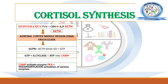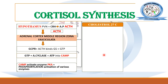Cholesterol is a 27-carbon molecule — its structure contains 27 carbon atoms. Once the side chain cleavage enzyme acts on cholesterol, it is converted into a new molecule called pregnenolone. Pregnenolone is a 21-carbon molecule. The side chain cleavage enzyme removes the carbon side chain from positions 22 to 27, yielding pregnenolone, which contains only 21 carbon atoms.